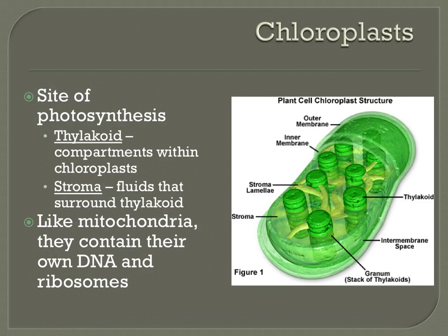Chloroplasts are organelles found within autotrophic eukaryotes — organisms that can produce their own food, such as plants and algae. Chloroplasts are the site at which photosynthesis takes place. There are similarities between chloroplasts and mitochondria: like mitochondria, chloroplasts contain their own DNA and ribosomes and are believed to have once been bacterial cells that lived independently. Parts within chloroplasts worth mentioning include thylakoids, which are stacked compartments, and stroma, which are fluids surrounding the thylakoids — the equivalent of matrix in mitochondria. Chloroplasts will be discussed in more detail in a later unit on photosynthesis.